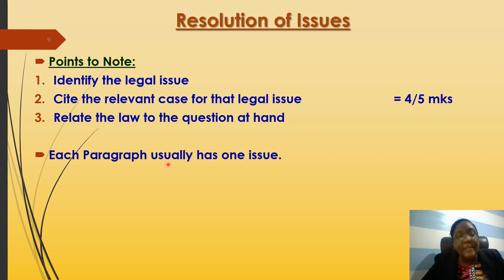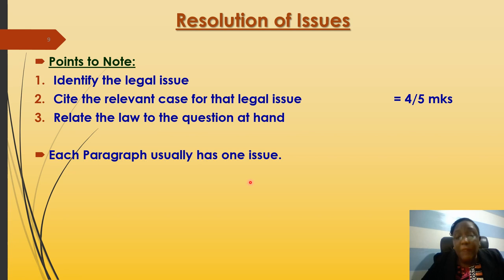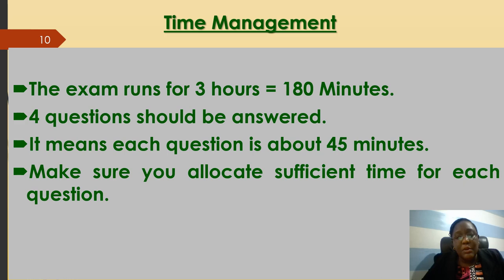For example, if the legal issue is that acceptance must be communicated: you've identified in the question that no one accepted, so the issue is whether acceptance must be communicated. Cite Felthouse v Bindley, which established that when someone makes an offer, acceptance must be communicated. Then show how in the facts Vero did not communicate acceptance because of XYZ — you will earn four or five marks depending on the marking scheme. Each paragraph usually has one issue, so with four to five issues you earn your full marks.